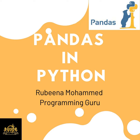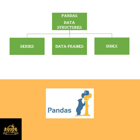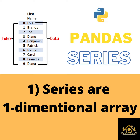Let's discuss something related to the pandas data structures. Pandas data structures consist of three types: Series, DataFrames, and Index. Series is nothing but a one-dimensional array — it can be either in the row format or the column format, that is, a row matrix or a column matrix.